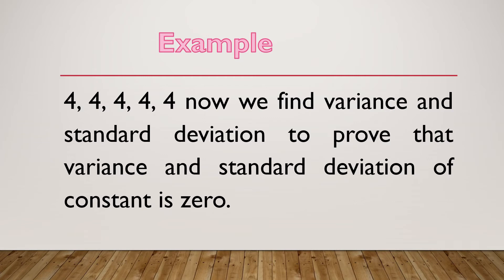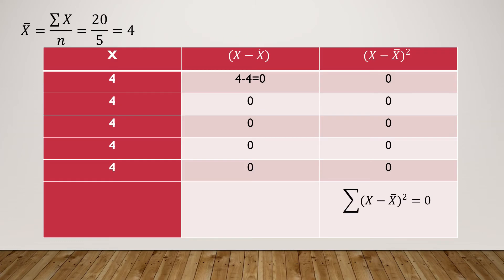Now we find the variance and standard deviation to prove that the variance and standard deviation of a constant is zero. First, we find the arithmetic mean x̄. The sum of all observations is 20, divided by the number of observations 5, so x̄ = 4.